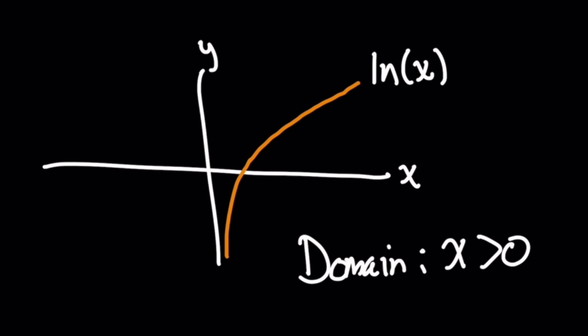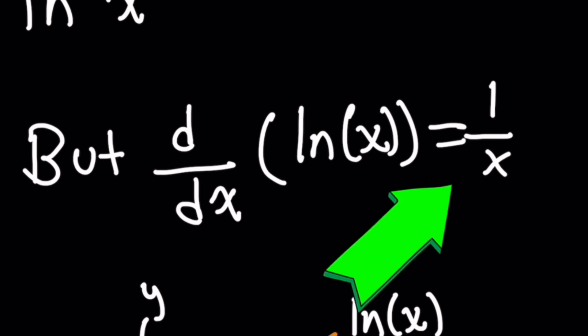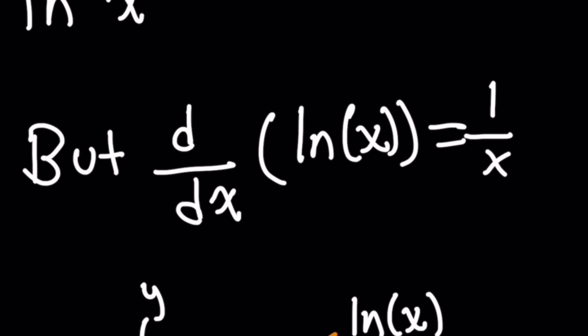What this means is that when you've learned that the derivative of natural log of x gives you a result that's one over x, it already assumes that you have a restricted domain. It's requiring that x is greater than zero from the get go.